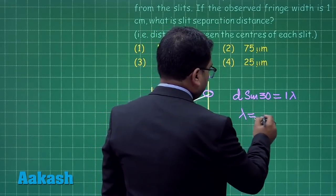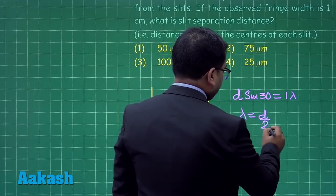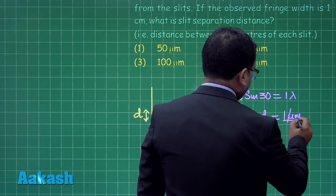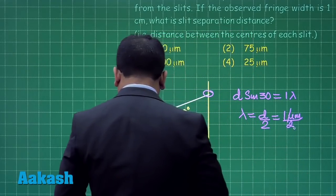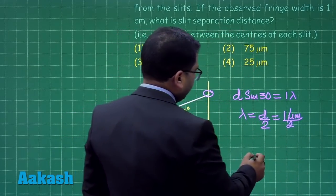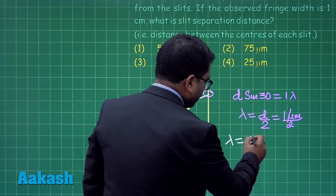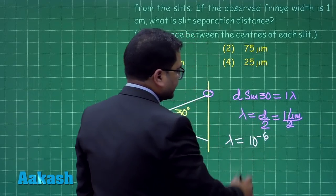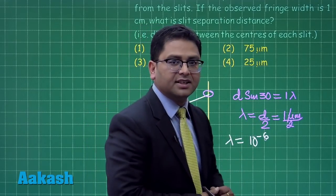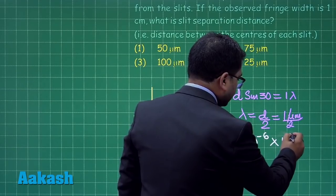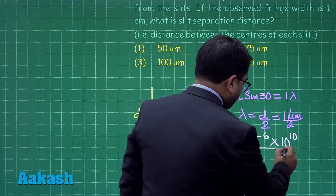Just putting the value, d is 1 micrometer, so I can write λ = d/2, and that is 1 micrometer divided by 2. Let me bring it in an easy format. λ is 10^(-6) meters, and I will multiply it by 10^10 divided by 2, by doing this I will be bringing the wavelength in angstrom.